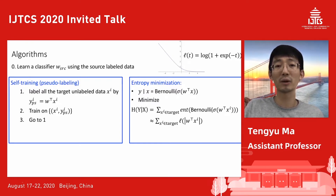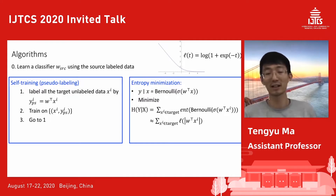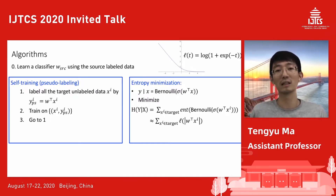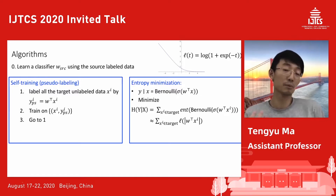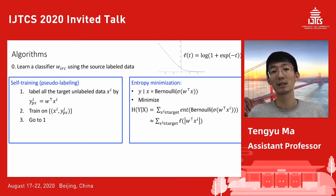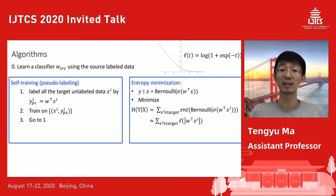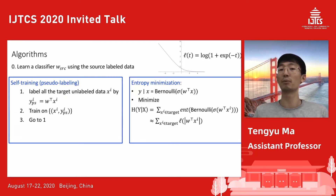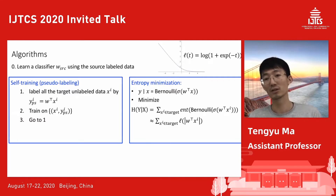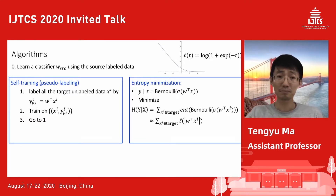Regarding the question about what 'target is more diverse' means: it's a special definition meaning some spurious features no longer correlate with the label in the target. Regarding whether self-training gets stuck at a local minimum: we have results for special cases like mixtures of Gaussians where convergence to a global minimum is provable. But the main focus of this work is on why the objective makes sense, not the computational aspect.